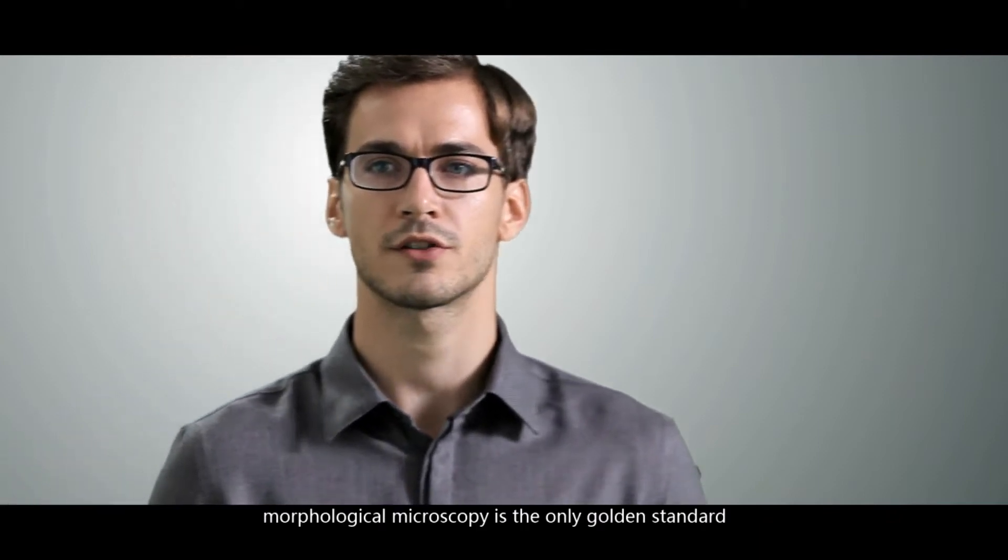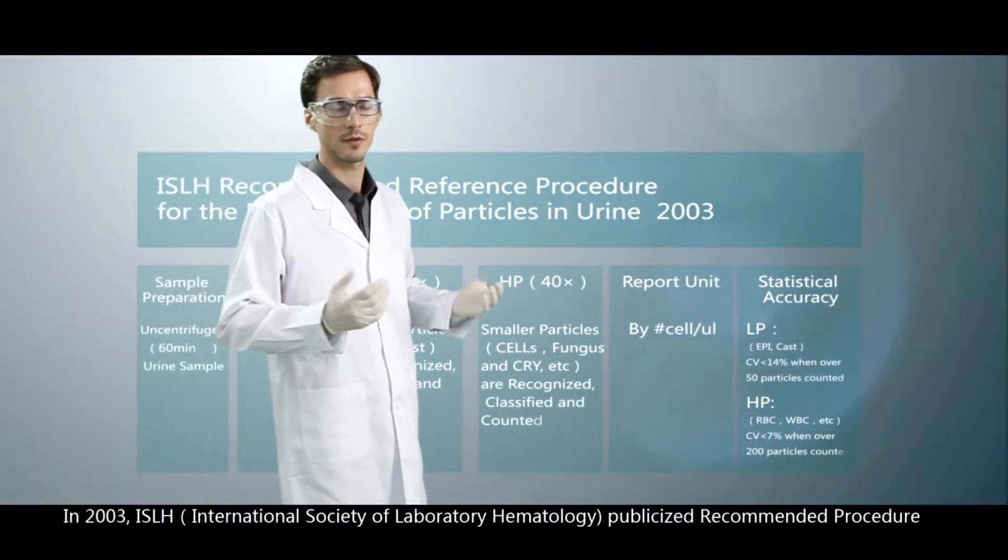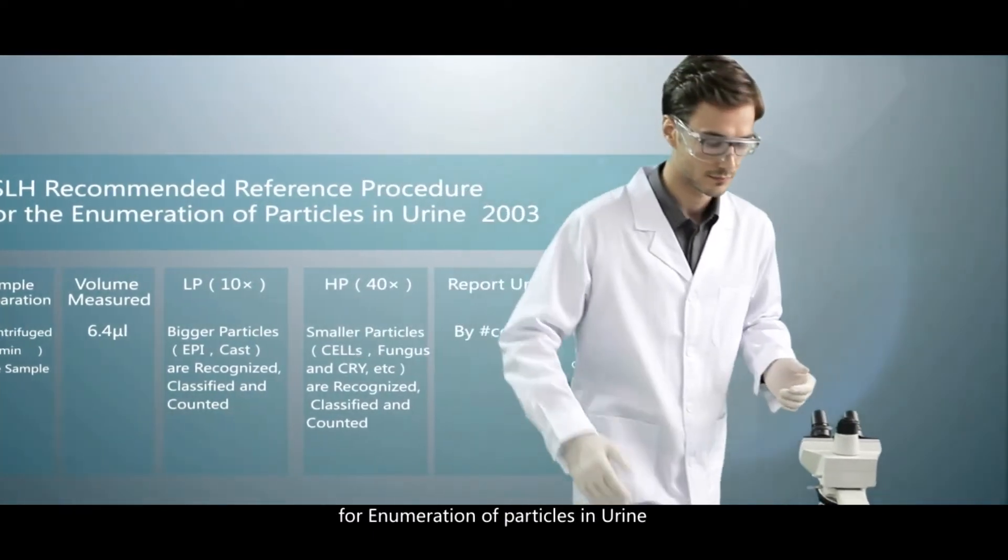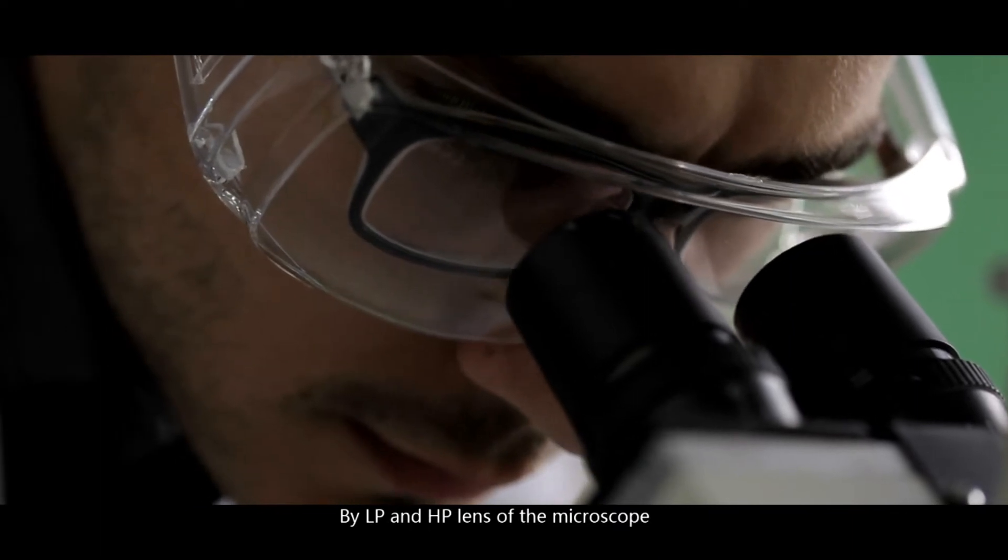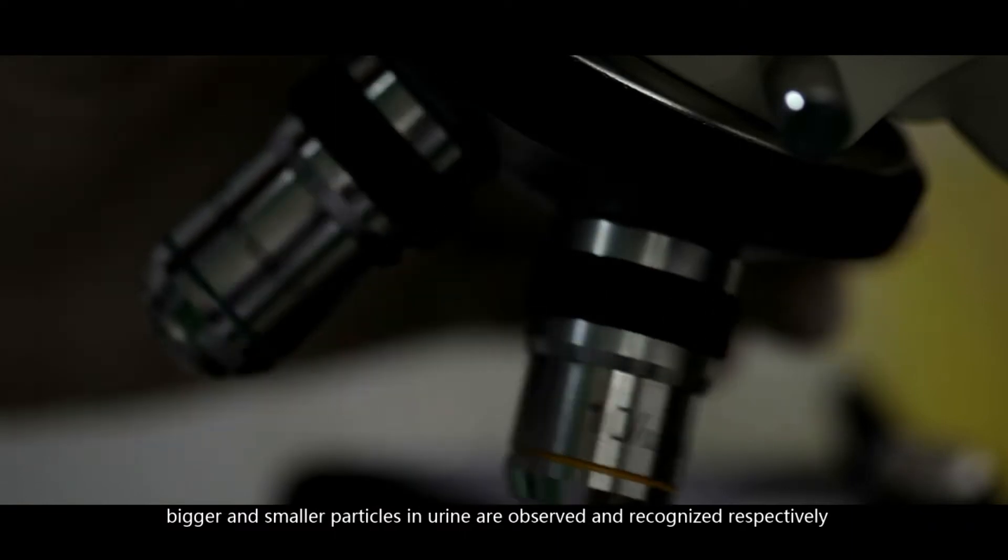Morphological microscopy is the only golden standard. In 2003, ISLH, International Society of Laboratory Hematology, publicized recommended procedure for enumeration of particles in urine. By low power and high power lens of the microscope, bigger and smaller particles in urine are observed and recognized respectively.